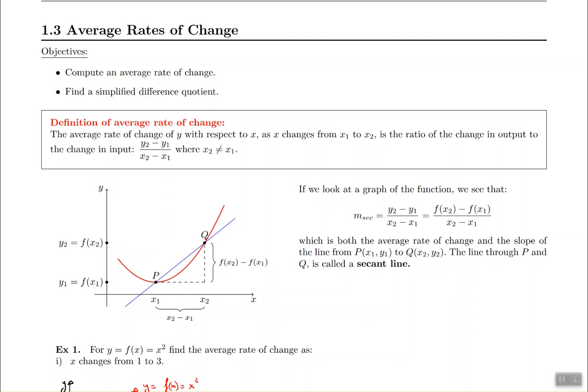In section 1.3 we will talk about average rate of change and this is just an introduction to what's called the simplified difference quotient. The difference quotient is how we define the derivative in the next section. So this is a section to get you mentally prepared to what we're about to do later on and so that you can understand what the concept of derivative is going to be like.